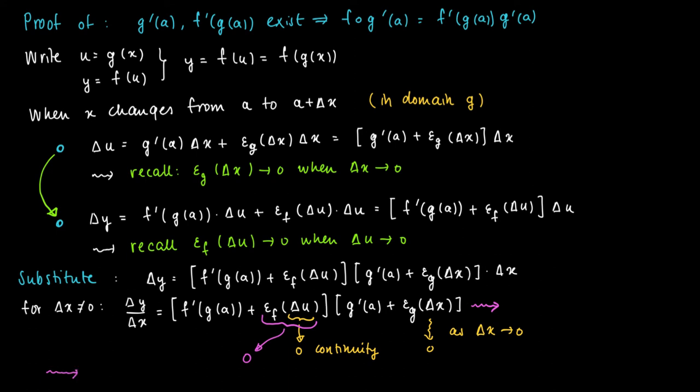So if we look at the product of terms on the right-hand side, then as Δx goes to zero, this has as a limit f'(g(a)) plus zero times g' plus zero. And this is just the product of the derivatives. So we see that if we take the limit of Δy/Δx for Δx going to zero, the limit exists. So this is the product f'(g(a)) times g'(a).